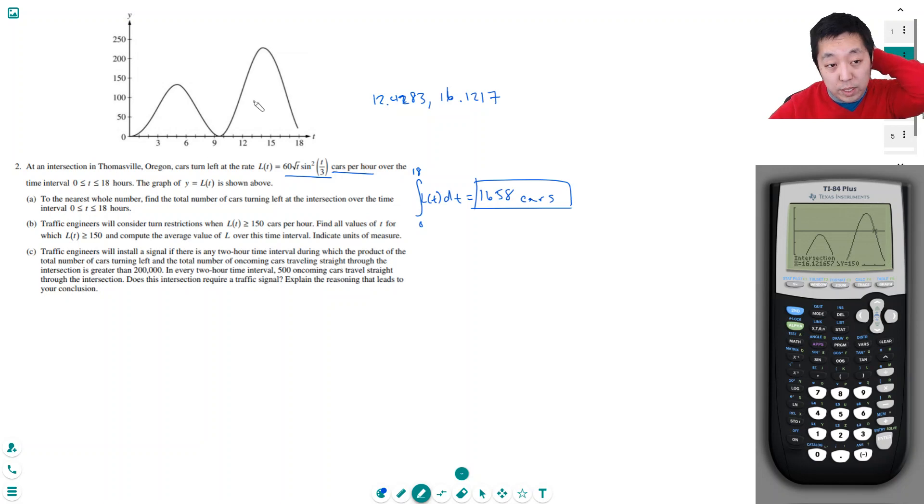So that's where it intersects 150. Now, to find the average value, I have to integrate over these two bounds. Like the definition, this is the definition of average value. L(t) dt. I'm going to add up the total number of cars, and I'm just going to divide it by the width of the interval.